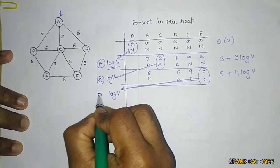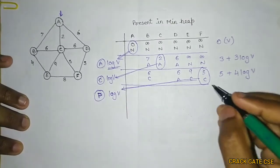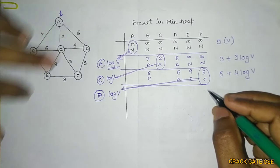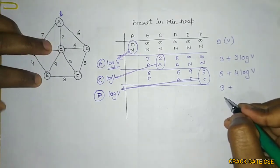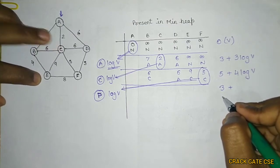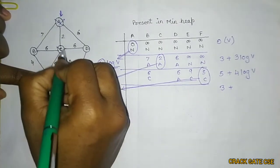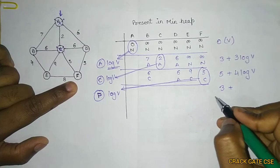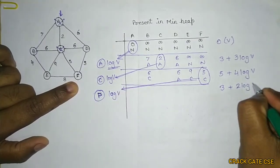We have selected F. For F, how many adjacent vertices are there? Three. But A and C have already been covered. So we can perform the decrease key operation at only 2 places, costing 2 log V.